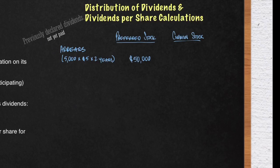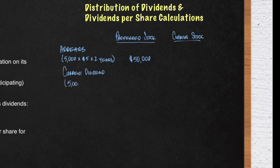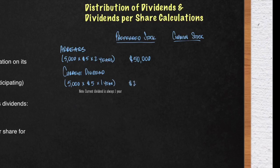Keep in mind that if the preferred stock was non-cumulative, that amount would be zero. Now you have to award them the current dividend, which is 5,000 shares of preferred stock times $5. This is always one year because the current dividend is the current year. This will give us $25,000.